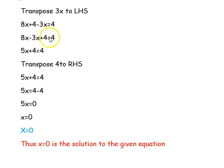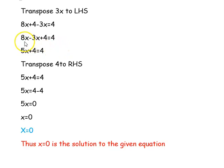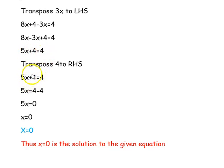We are going to rearrange this equation: 8x minus 3x plus 4 equal to 4. Solving: 8x minus 3x equals 5x, so 5x plus 4 equal to 4. In our next step, we are going to transpose this 4 from the left hand side to the right hand side of the equation.